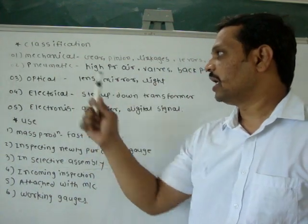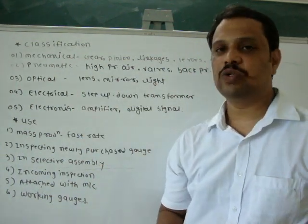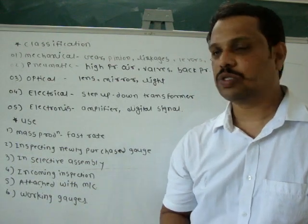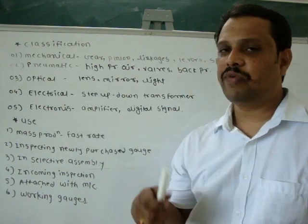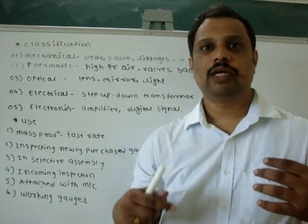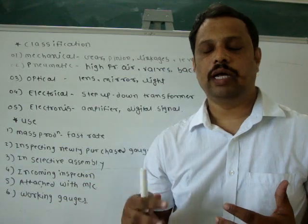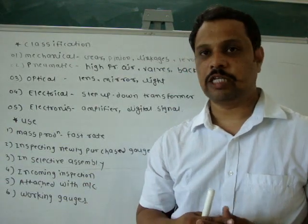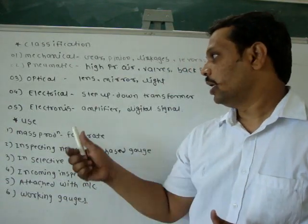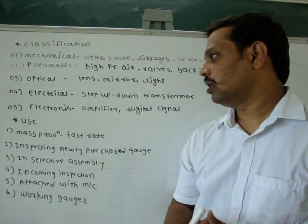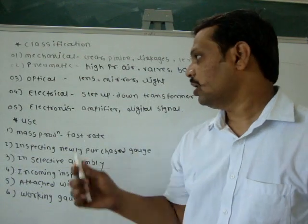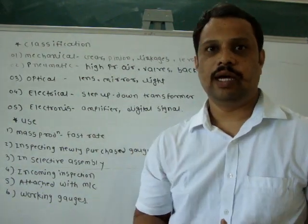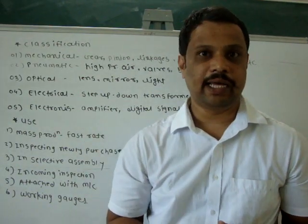In an optical comparator we use a lens, mirror, and light source. In an electrical comparator we use electrical step-up and step-down transformers. In an electronics comparator we use amplifiers and digital techniques.